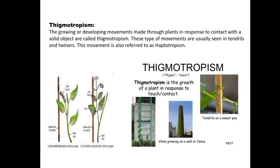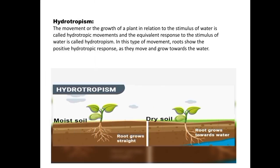Hydrotropism refers to growth movements in response to the external stimulus of water. Roots are positively hydrotropic — they bend towards the source of water — while stems are either indifferent or negatively hydrotropic. The positive hydrotropic movement of roots is stronger than the geotropic response; if there is scarcity of water, roots bend towards sewage pipes and other water sources regardless of gravity. For example, plant roots grow in the direction of higher humidity, which is why when we pull a plant we find its roots growing in all directions.